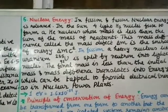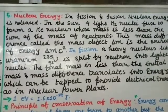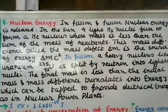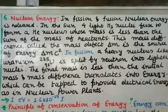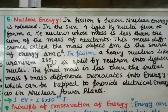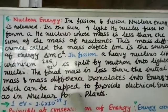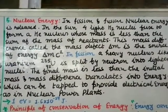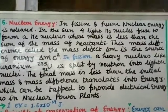Fusion and fission are useful if controlled, but harmful if uncontrolled. Controlled fission is used in nuclear power plants to generate electrical energy. Uncontrolled fission, as in nuclear bombs, is harmful.